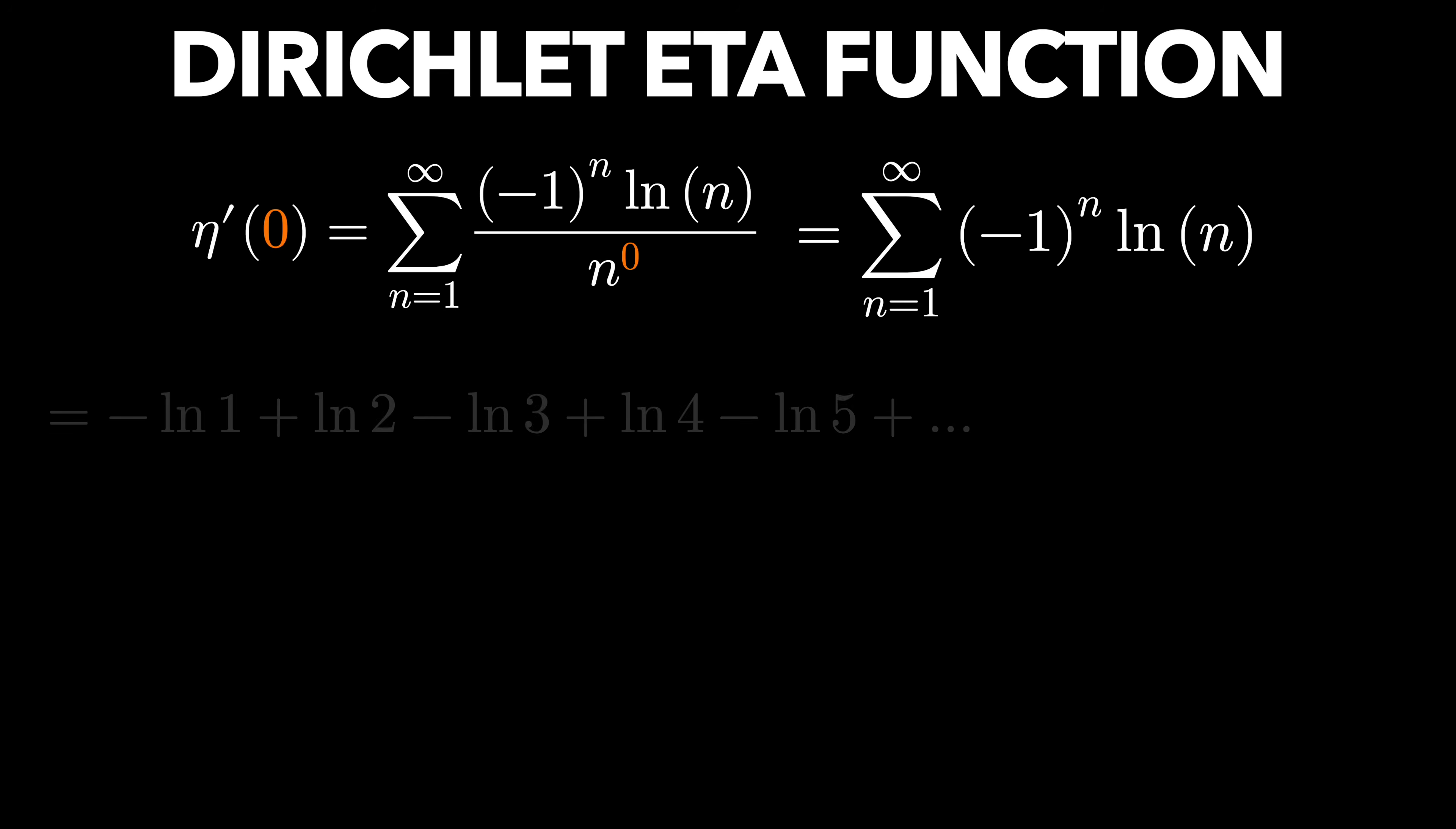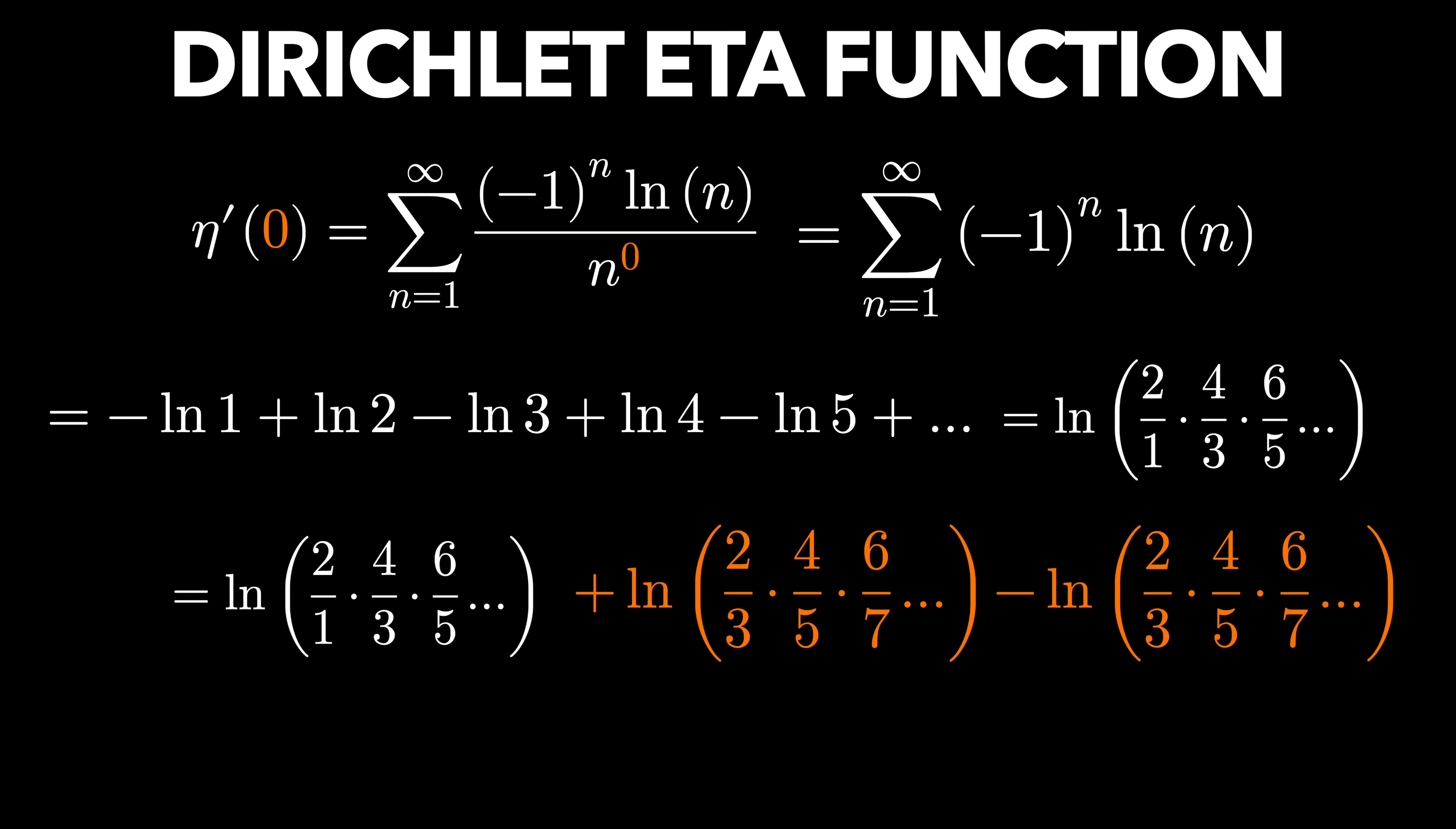And if we start to write out this sum, we get a very interesting pattern if we try to manipulate this with properties of logarithms again. Remember when we're subtracting logarithms, we can write it as a single logarithm of the first argument over the second argument. And when we're adding logarithms, we can write it as a single logarithm of the first argument times the second argument.